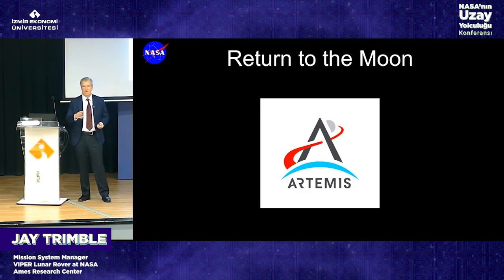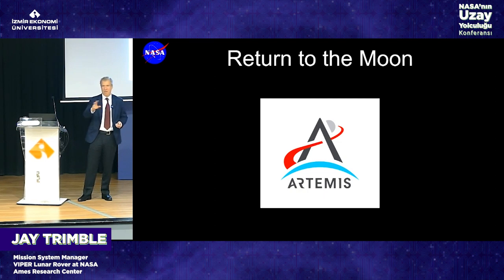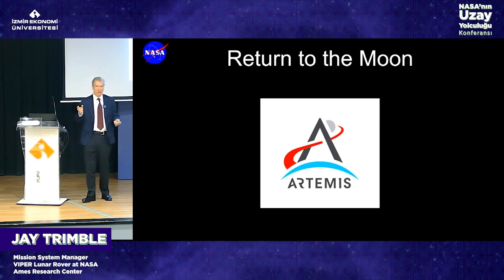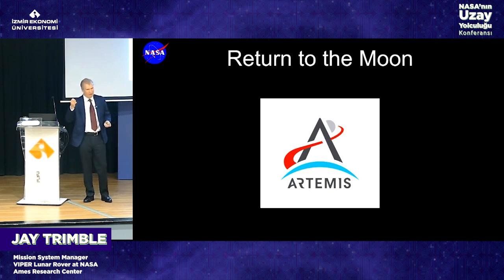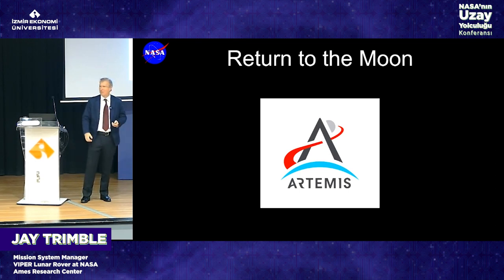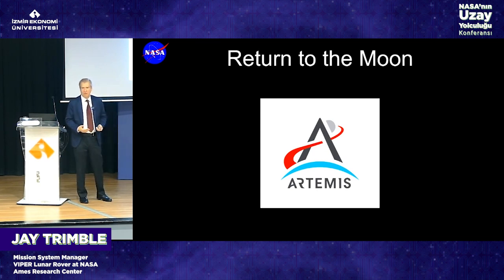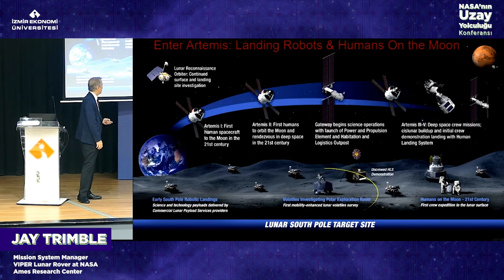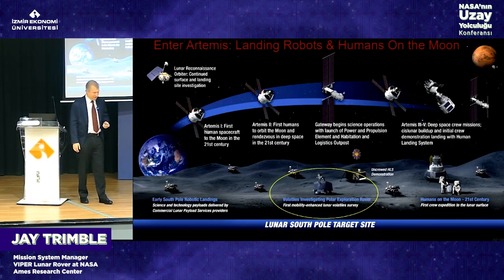NASA's new program to return to the moon is called Artemis — named for the twin sister of Apollo in mythology. Unlike Apollo, which involved only men, Artemis will be inclusive: men and women, international participants from everywhere will have the chance to go to the moon. The program is designed to be sustainable, with repeated missions.